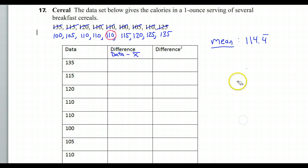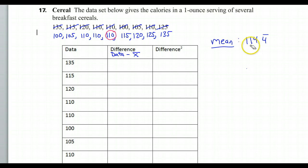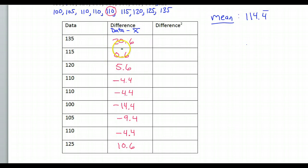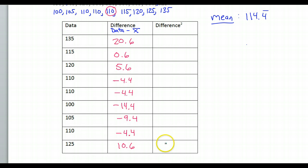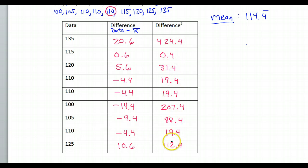Now let's find the standard deviation. I've already recorded the data in the first column. We'll need the differences in the second column, using our mean of 114.4. These are all the differences you get by subtracting the mean of 114.4 from each data value one by one. Now we take these differences and square them and put them in the third column. Here's what you get when you square all those differences.